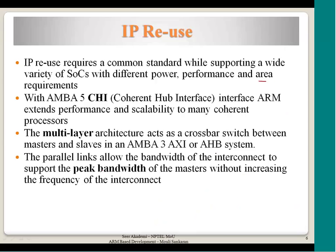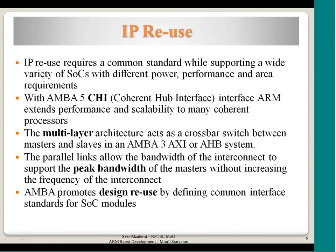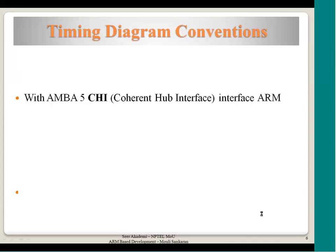Parallel links allow the bandwidth of the interconnect to support the peak bandwidth of the masters, which can be done by increasing the data width. When you have multiple layers you can increase the data width, and without increasing the clock rate the bandwidth can be increased because more data is transferred within one clock cycle. Peak bandwidth can be achieved without increasing the frequency of the interconnect. AMBA promotes design reuse by defining a common interface standard for SOC components.